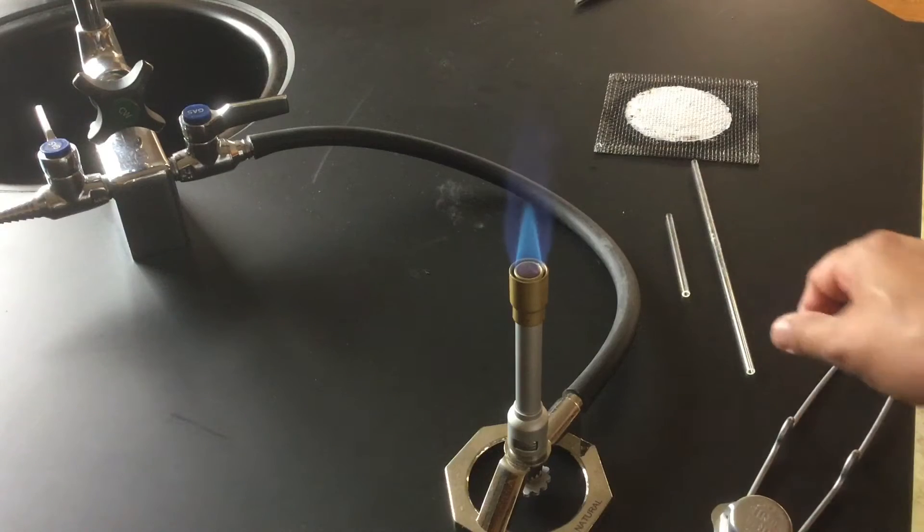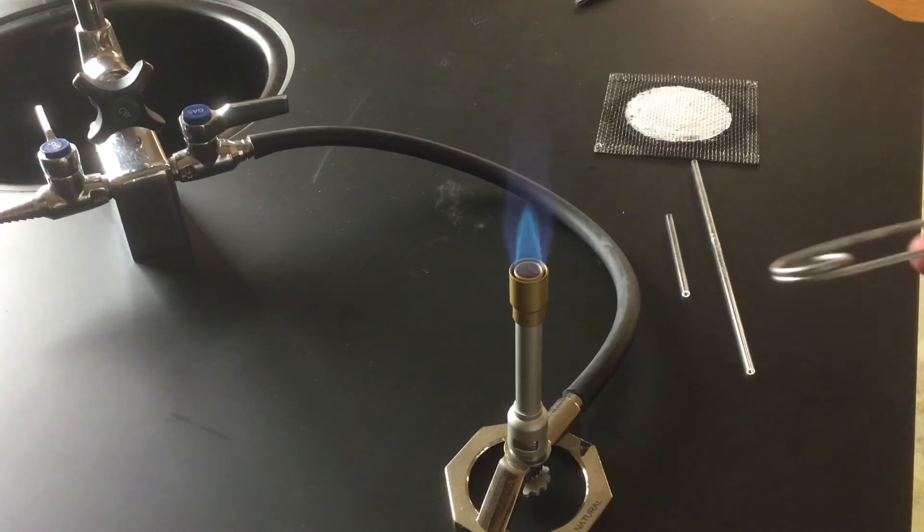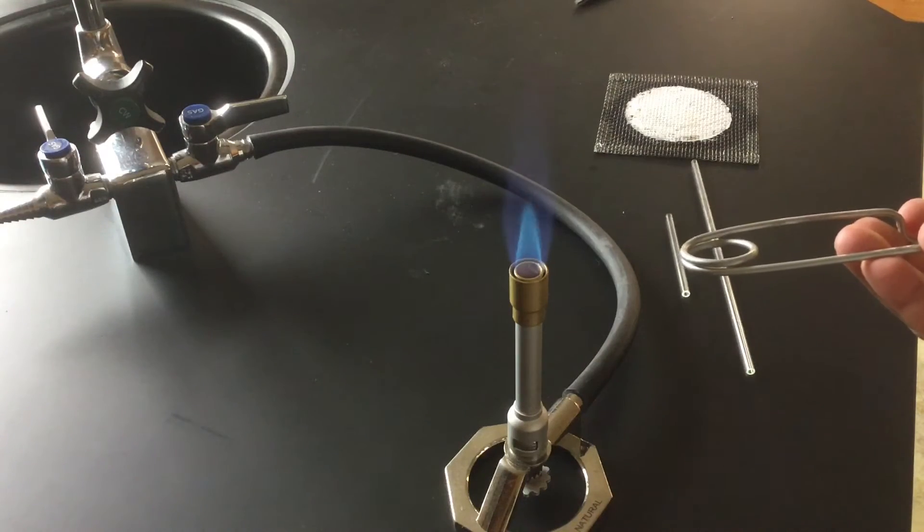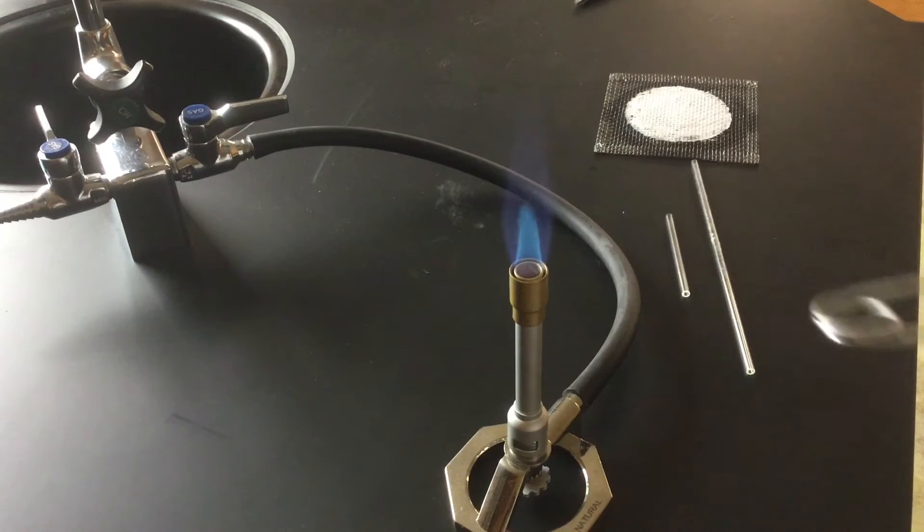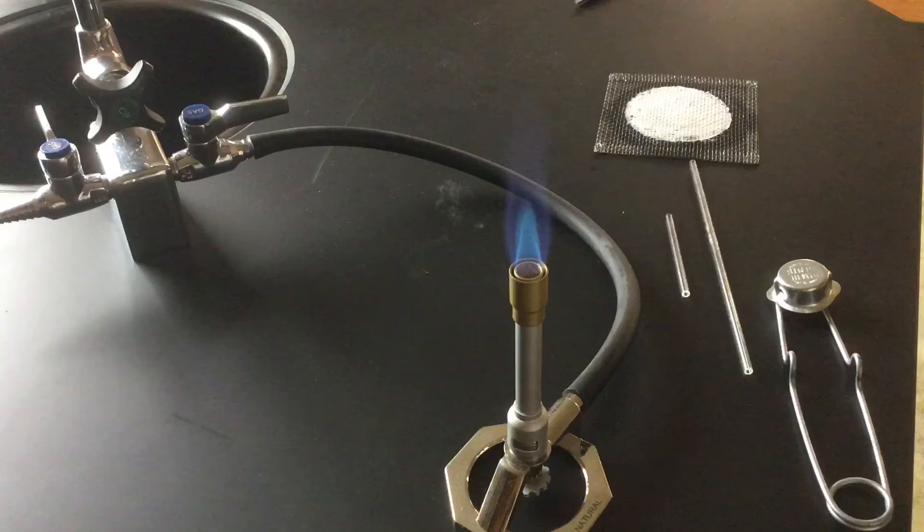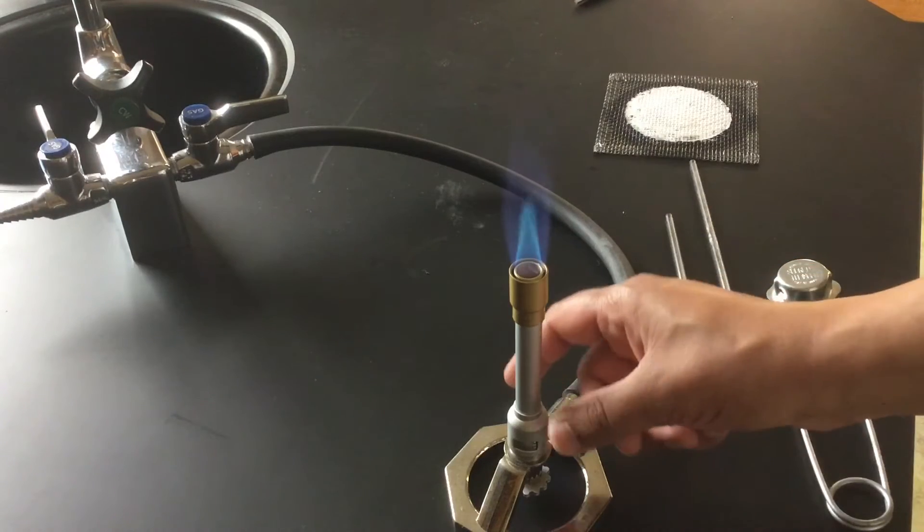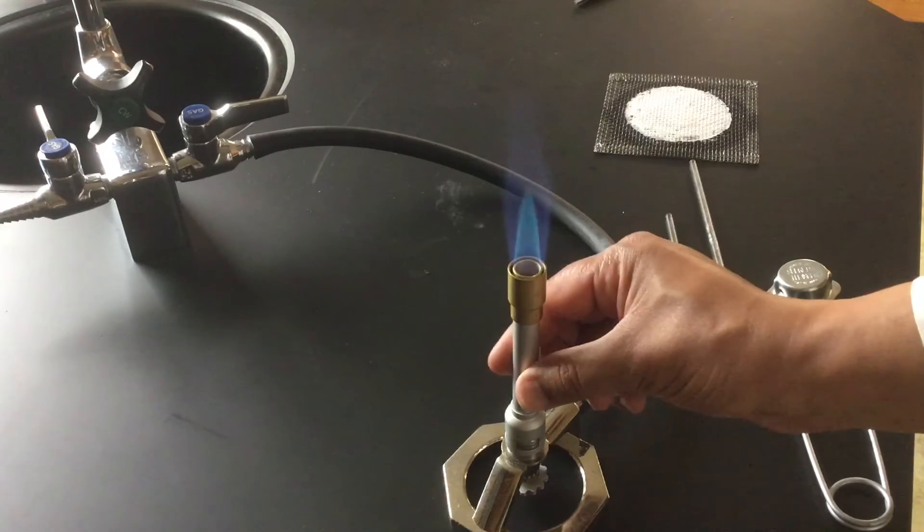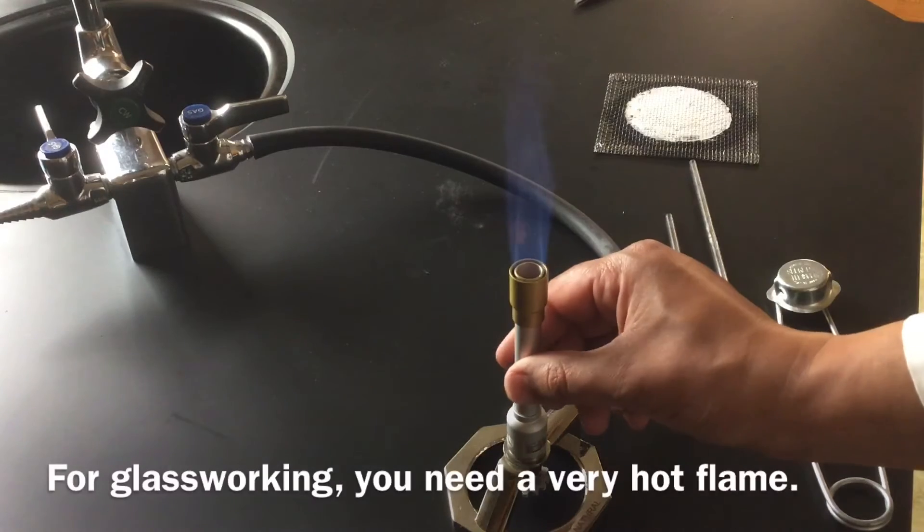As you can see here this is a very nice flame for this purpose because I have a pale outer blue cone that is kind of hard to see, but then there's that nice neon blue inner cone that's very hot. That's the part of the flame I'm going to use to fire polish this. So if it's not the right temperature you can adjust the temperature accordingly.